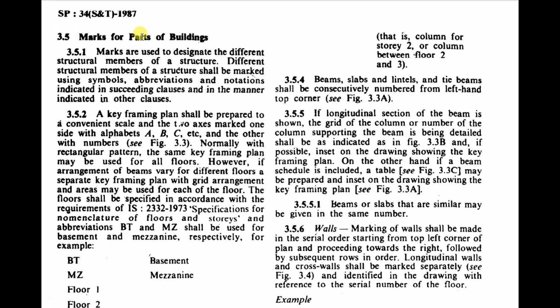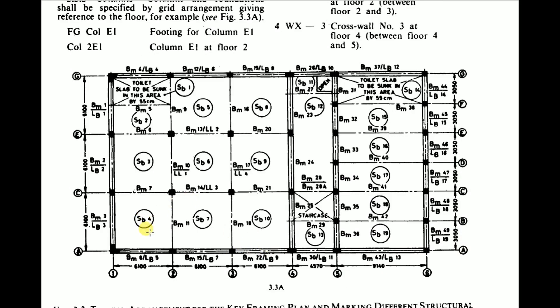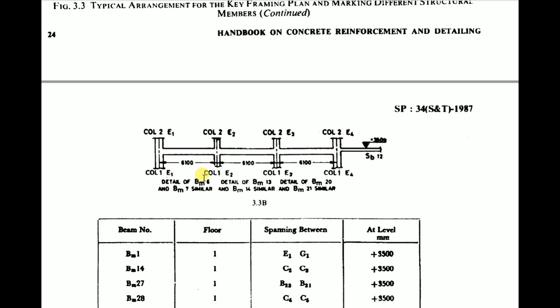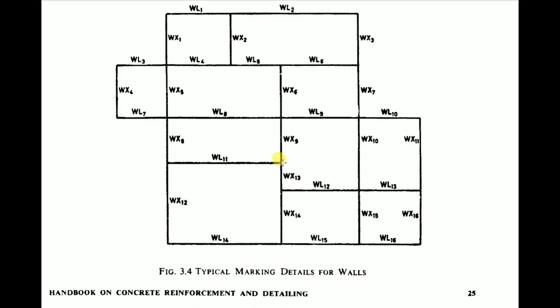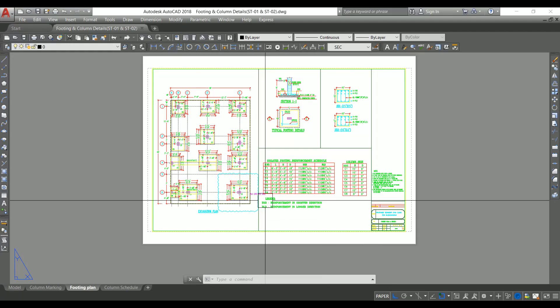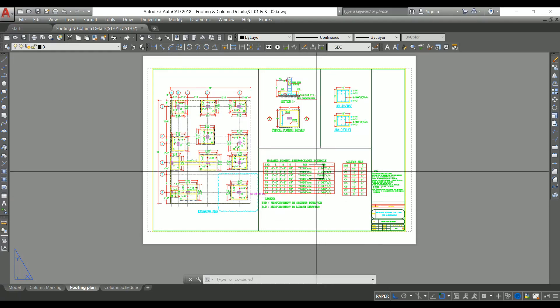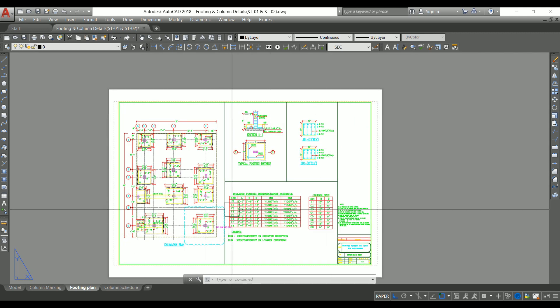Other symbols show how to represent a bar with hooks, a bar with a 90-degree bend, level marking in elevation, and level marking in plan. When reinforcement is provided in the form of a mat, the bottom mat and top mat are shown with distinct symbols. Section 3.5 covers marks for parts of buildings — for example, slab markings such as SB4, SB6, SB7; beam markings; column markings; and footing markings. Figure 3.4 shows typical marking details for walls.